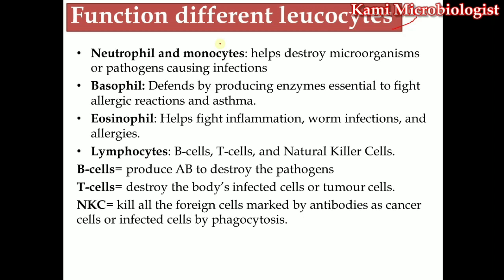We have five types of leukocytes: neutrophils, monocytes, basophils, eosinophils, and lymphocytes. Neutrophils are granulocytes — they have granules and a three-lobed nucleus. Monocytes are agranulocytes — they do not have granules and have a very large nucleus that can occupy the whole area of the cell. The main function of both is to engulf bacteria or any foreign organism and eliminate infection.